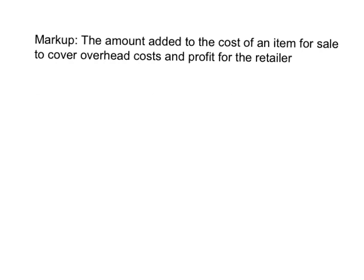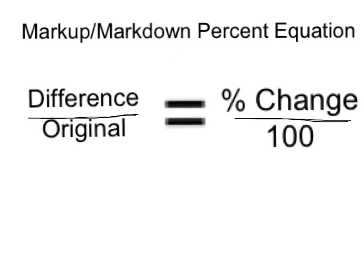We call them markup or percent change problems, but they're not only used when talking about a money value being increased — they can be used for any value being increased. The equation for percent change, which we use for both markup and markdown, is the difference between the original cost and the new cost over the original cost, equal to the percent change over 100.